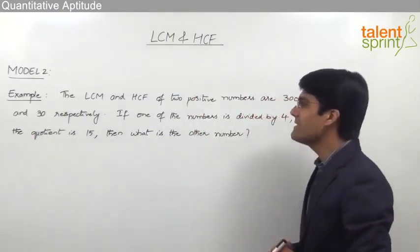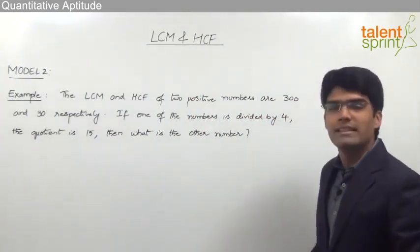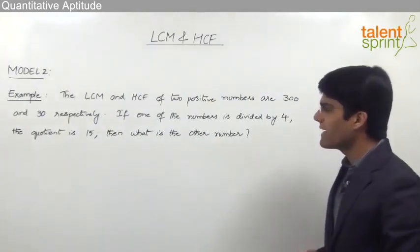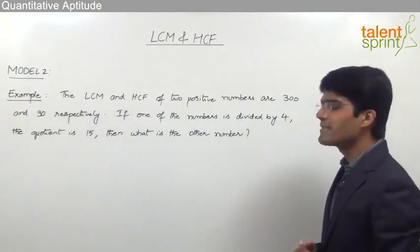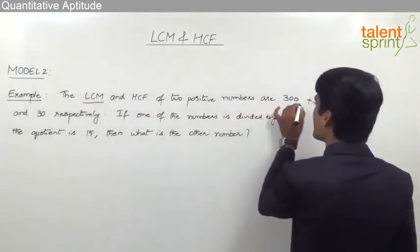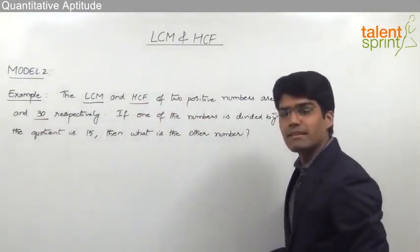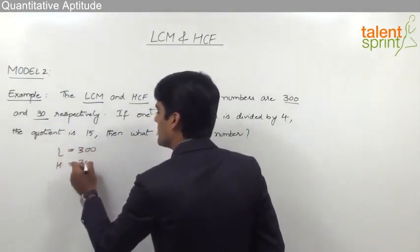The question here is: the LCM and HCF of two positive numbers are 300 and 30 respectively. If one of the numbers is divided by 4, the quotient is 15. Then what is the other number? As given in the question, the LCM is 300 and HCF of two positive numbers is 30. So we can say that L is equal to 300 and H is equal to 30.